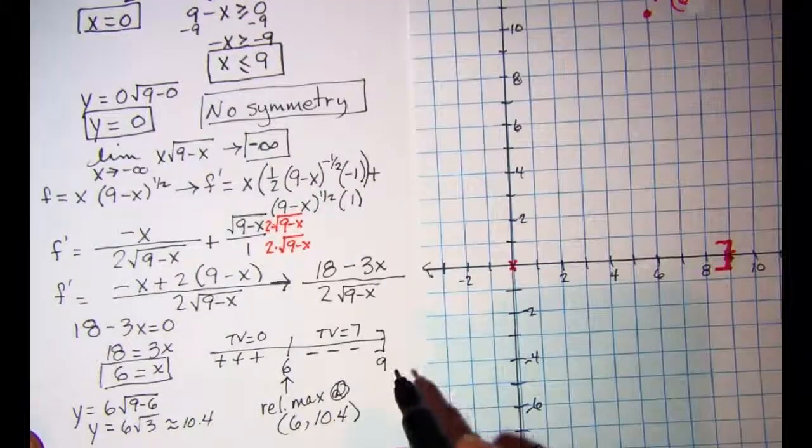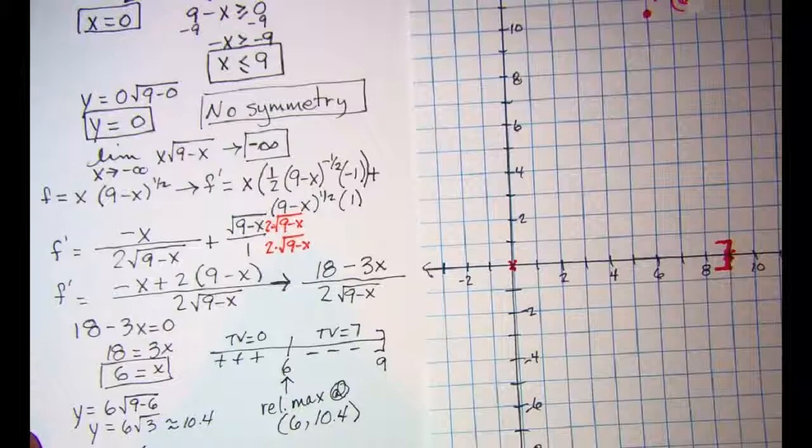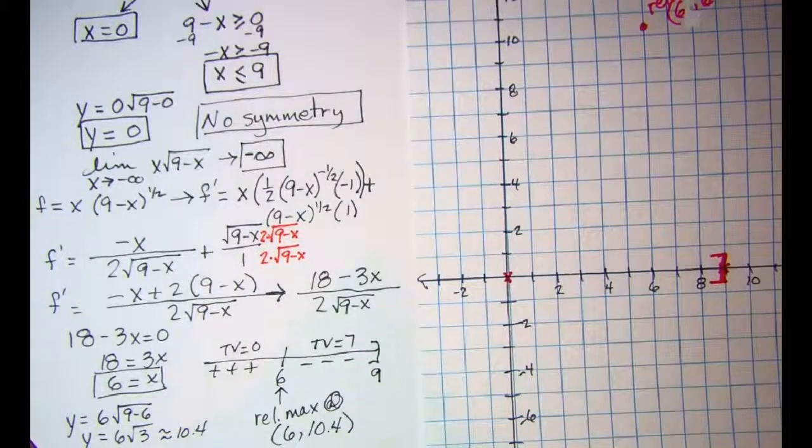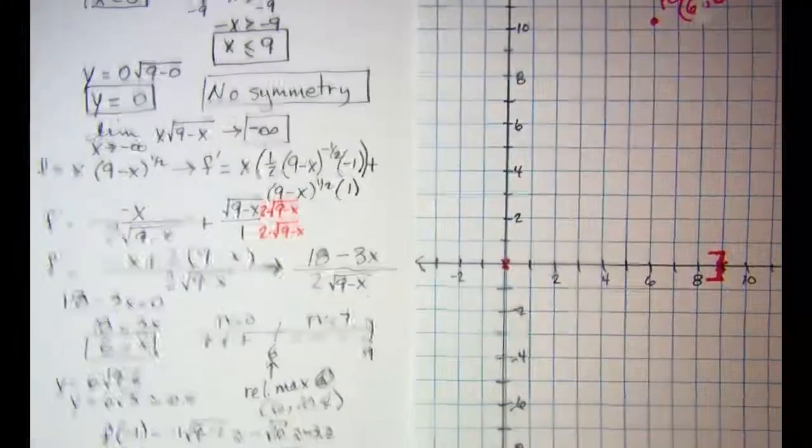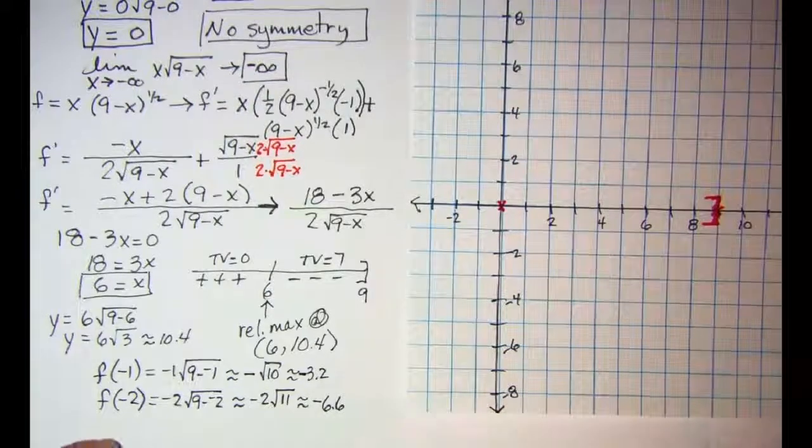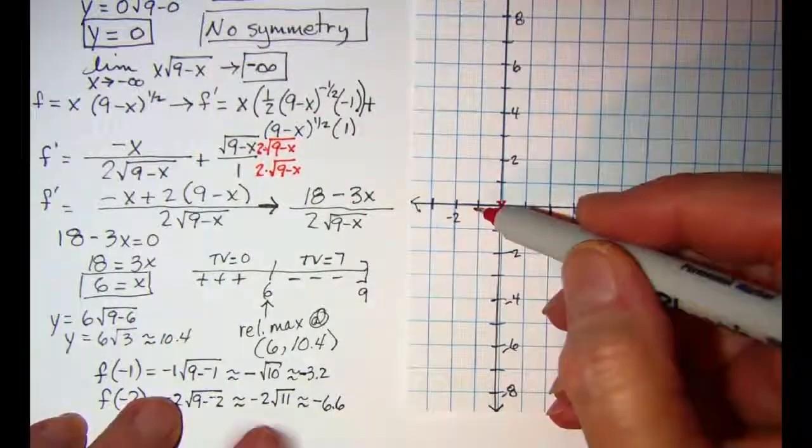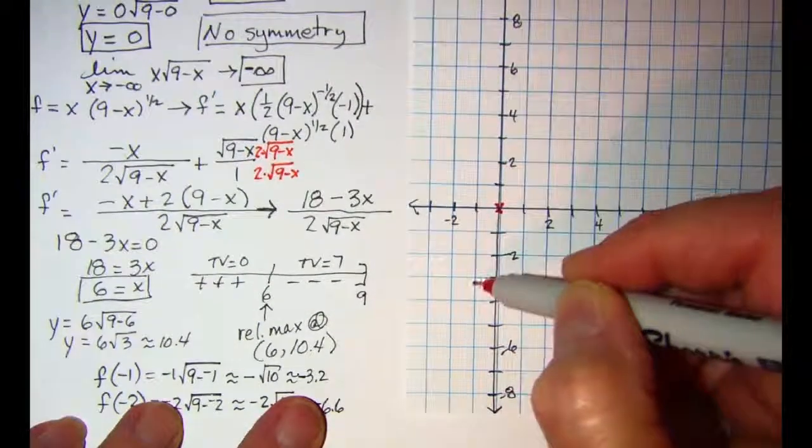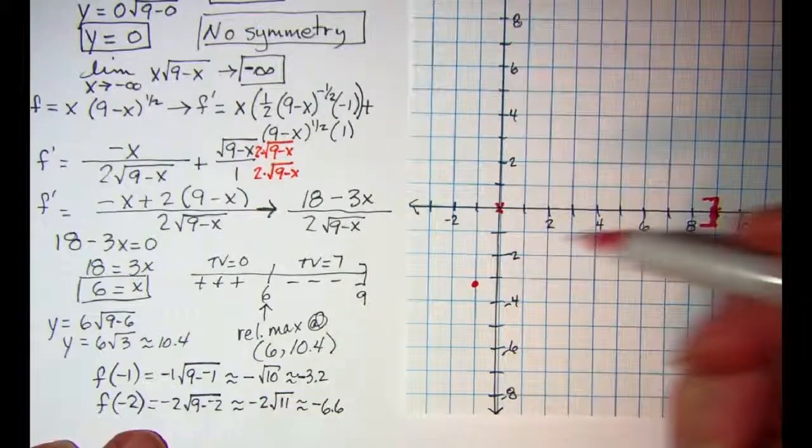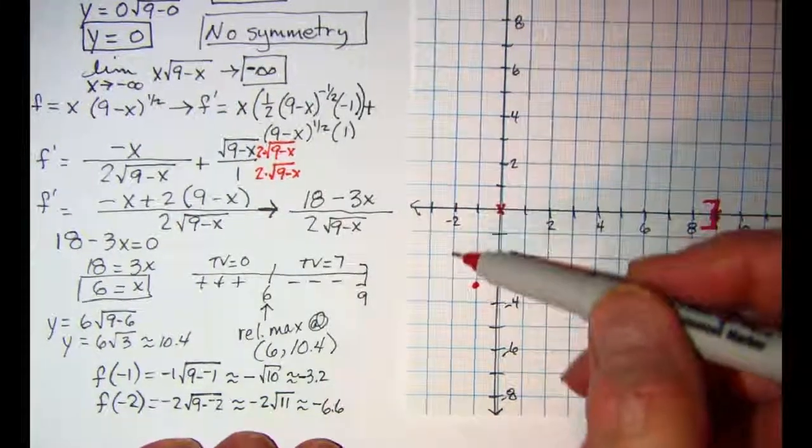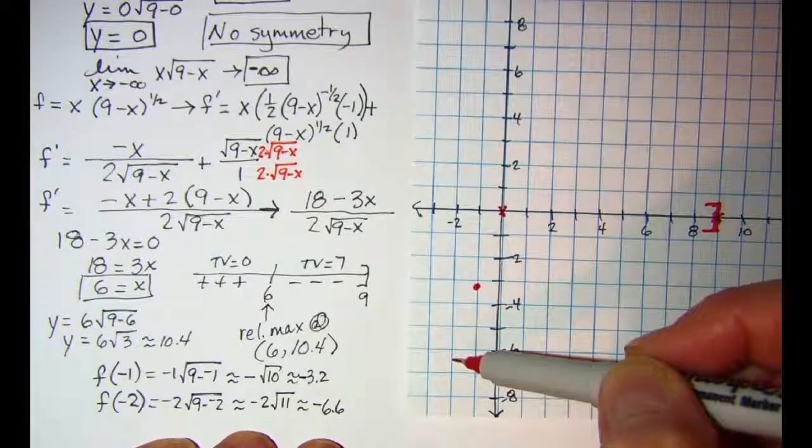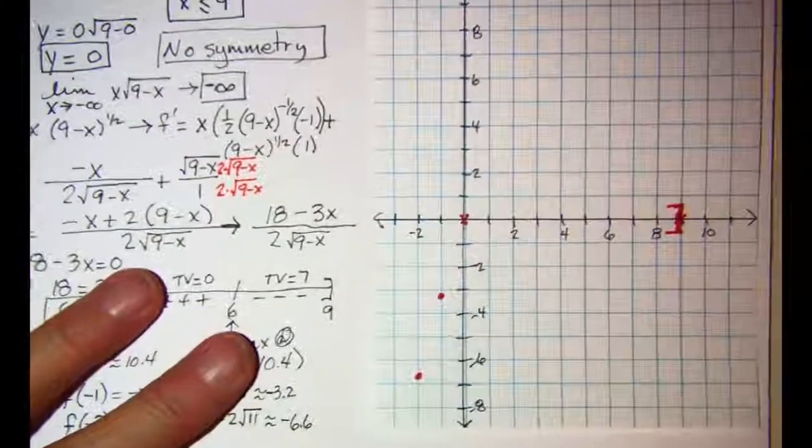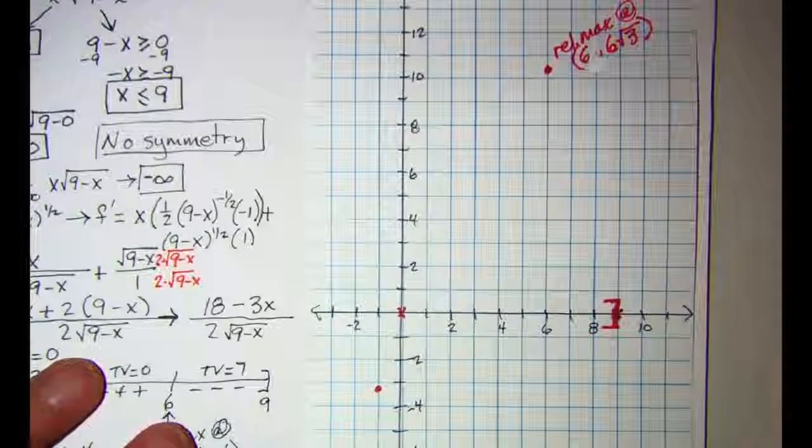Let me find f of negative 1 and f of negative 2. So I'm going to plot these points. When x is negative 1, we have a negative 3.2, and when x is negative 2, we have a negative 6.6. I can draw my curve now.